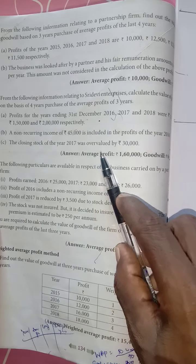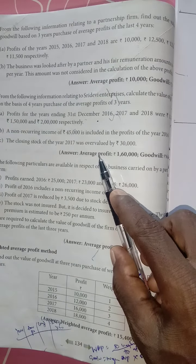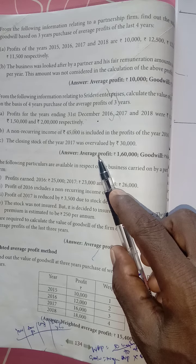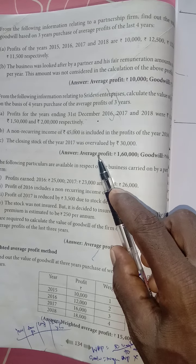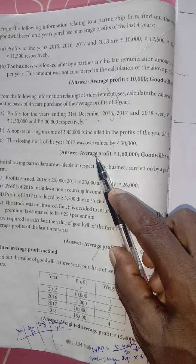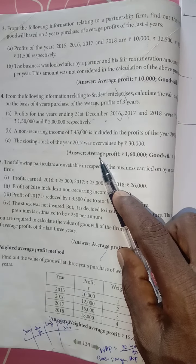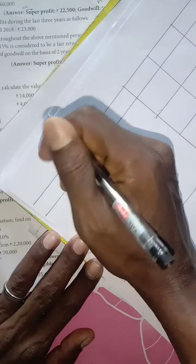The closing stock of the year 2017 was overcast by ₹30,000. Now we can begin calculating the goodwill. First, let me create a chart.